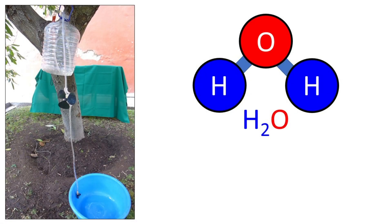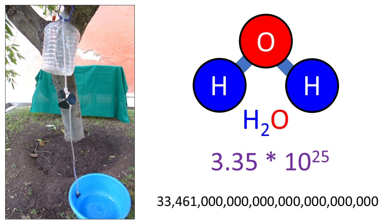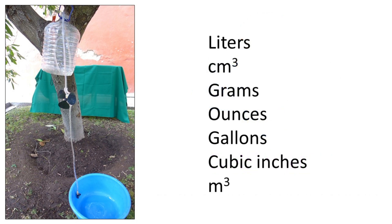I imagine that the smallest thing that can be called water is a molecule. I asked Google how many molecules are in a liter of water, and it answered 3.35 times 10 to the 25th power. It is not practical to measure the amount of water in a container in water molecules, but it is very easy to measure it in liters, cubic centimeters, grams, ounces, gallons, cubic inches, etc. We have many units to choose from. For example, this fully charged tank is about 5 liters.